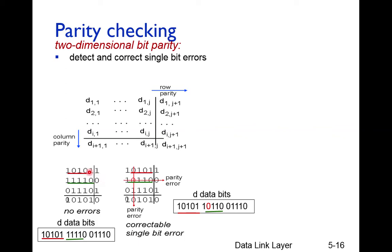When the receiver gets the data, it arranges it into rows and columns, and places the parity values sent by the sender. It then checks for errors. In the first row the number of ones is even — no error. In the second row the number of ones is odd, so this row has an error. In the third row the number of ones is even — no error.